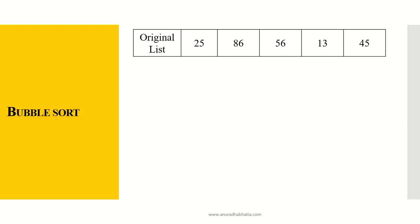Now let's take an example of how bubble sort actually works. This is the original list of elements: 25, 86, 56, 13, and 45. This is a small list with five elements.